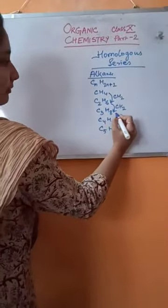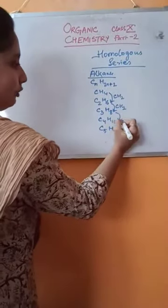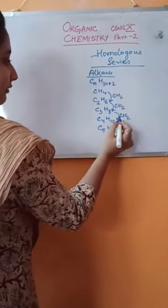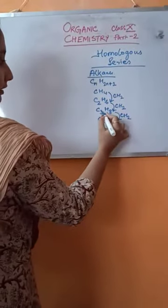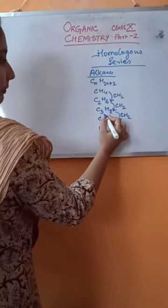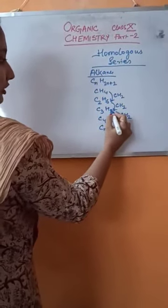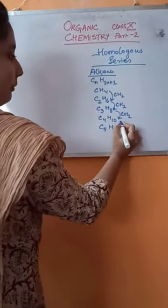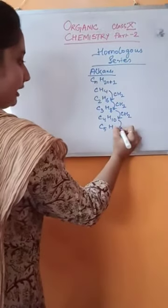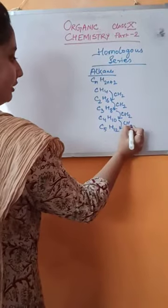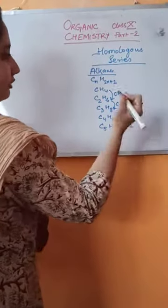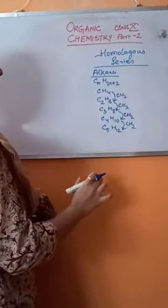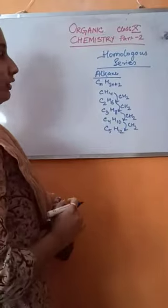Again, from propane to butane, we see that if we add a CH₂, then C₃ plus 1 gives C₄, and H₈ plus 2 gives H₁₀. From butane to pentane also, it differs by a CH₂ group. So all the alkanes form a homologous series.